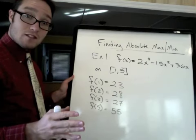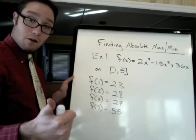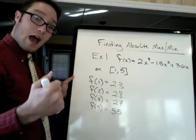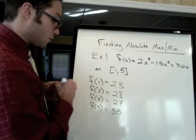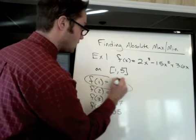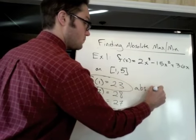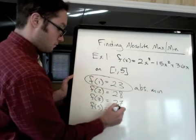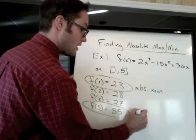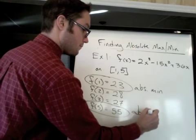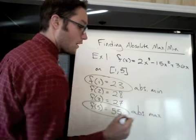Now I just have to pick from this list what's the smallest number, what's the largest number. That's the absolute min and the absolute max. So, ding ding ding, this is the winner. Absolute min. And ding-a-ling-a-ling, this is the absolute max on that interval.